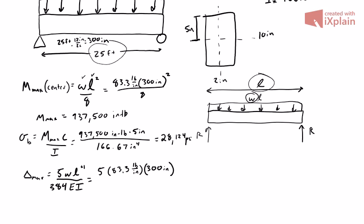On the bottom we have 384, our modulus of elasticity is 1.75 times 10 to the sixth psi, and our moment of inertia is 166.67 inches to the fourth. We plug all this in and get that the deflection equals 30.1 inches.